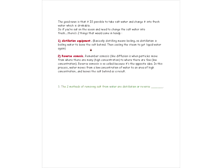Reverse osmosis is another way of removing salt. If you remember what osmosis is — it's when particles move from a high concentration to a low concentration. Reverse osmosis is the opposite: water moves from a low concentration to an area of high concentration, and as a result it leaves the salt behind. So the two methods of removing salt from water are distillation and reverse osmosis.